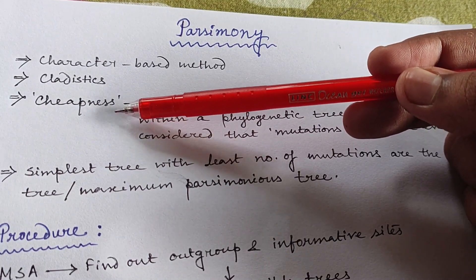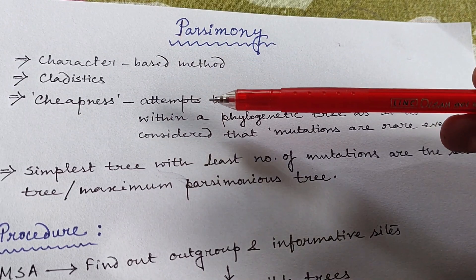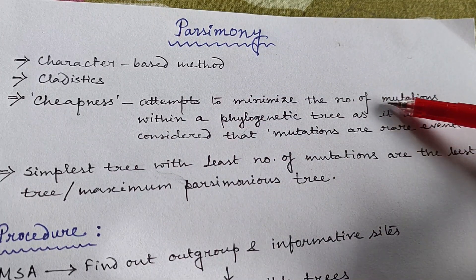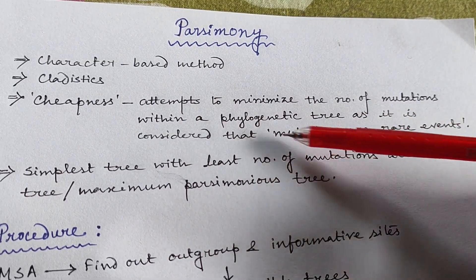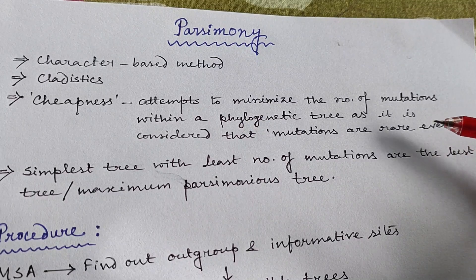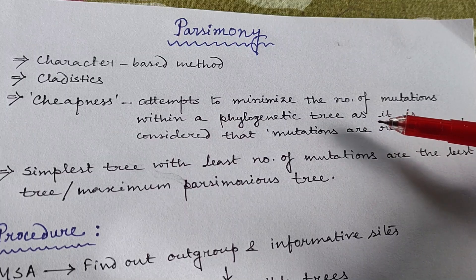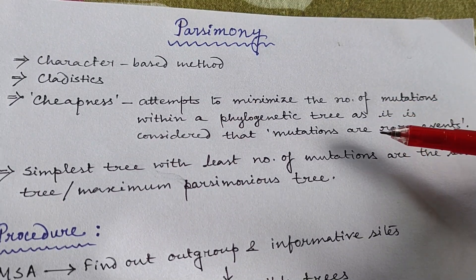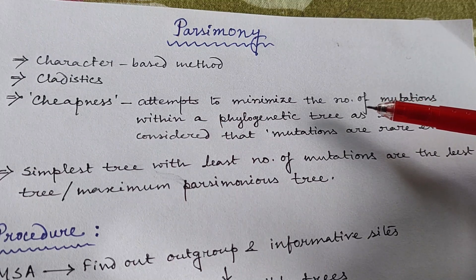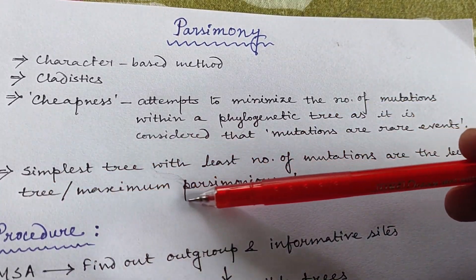The word parsimony means cheapness — in Bengali it means 'keep tip.' In parsimony, it attempts to minimize the number of mutations within our phylogenetic tree, showing cheapness in terms of mutations. This is because mutations are considered rare events in nature. Whenever a new species forms from an old species — whenever speciation occurs — there must be some evolutionary changes, but nature does not prefer too many mutations. Nature always prefers a lesser amount of mutation. That is why in parsimony we attempt to minimize the number of mutations, and the simplest tree with the lowest number of mutations is considered the most parsimonious tree.